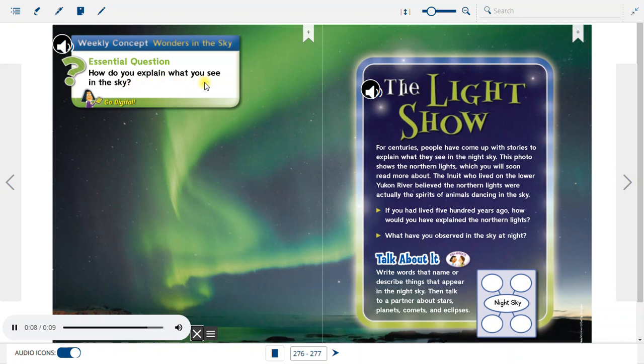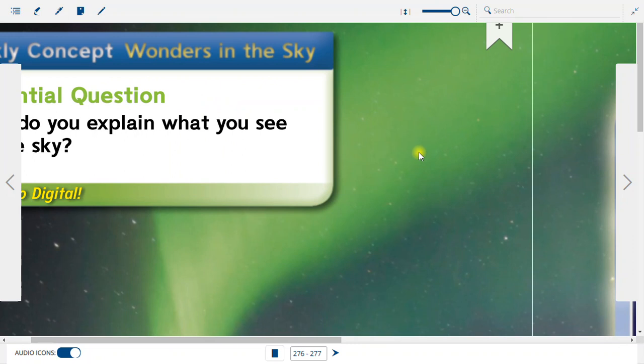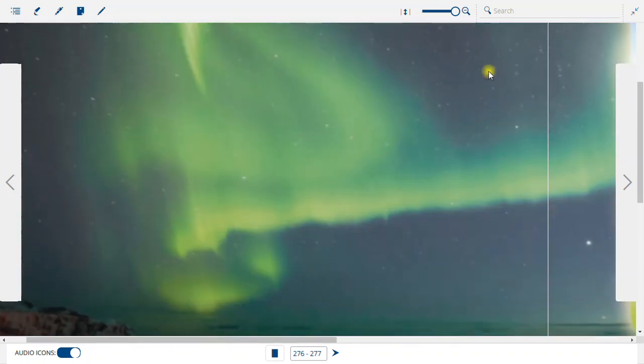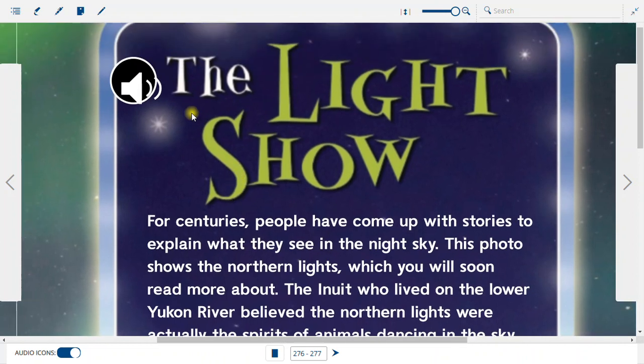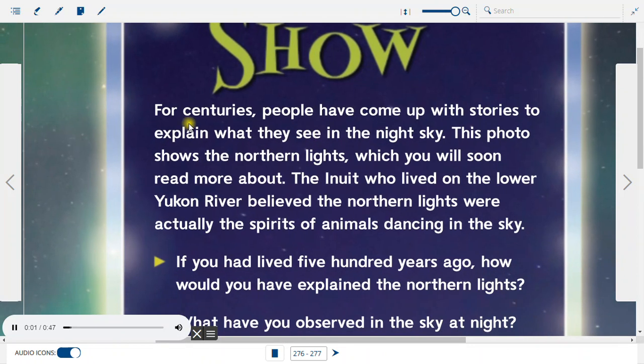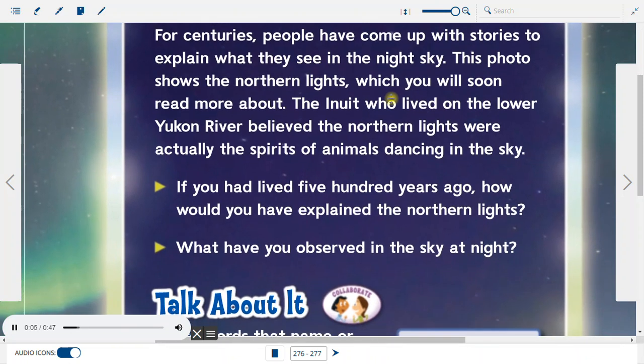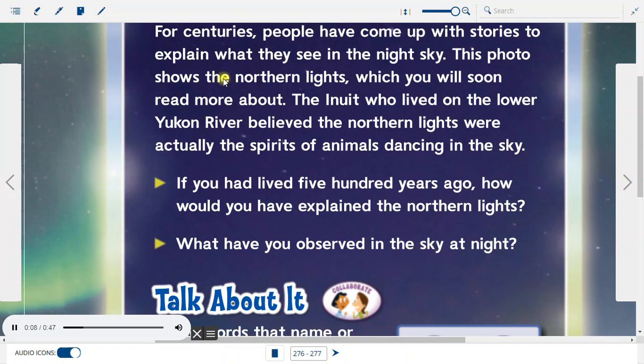How do you explain what you see in the sky? The Light Show. For centuries, people have come up with stories to explain what they see in the night sky. This photo shows the Northern Lights, which you will soon read more about.